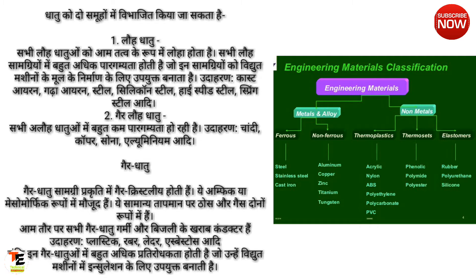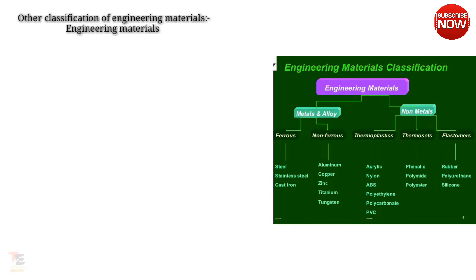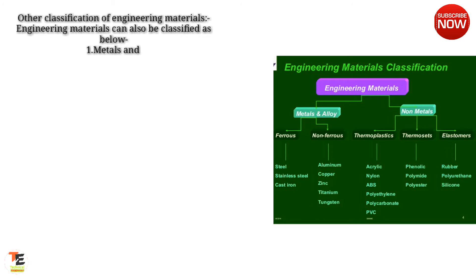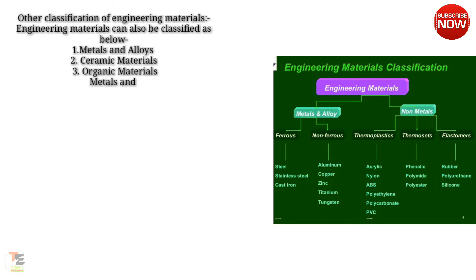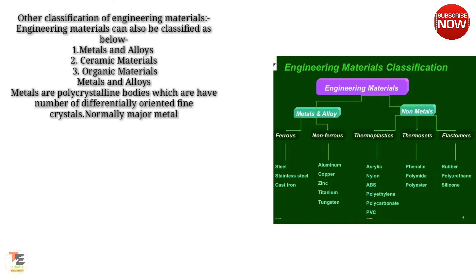Another classification of engineering materials: engineering materials can also be classified as: 1. Metals and Alloys, 2. Ceramic Materials, 3. Organic Materials. Metals and Alloys — metals are polycrystalline bodies which have a number of differentially oriented fine crystals.